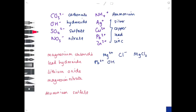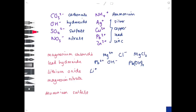With lead hydroxide, you have Pb²⁺ and OH⁻. You need two OH groups to balance, giving Pb(OH)₂ — the brackets are needed because the 2 applies to both oxygen and hydrogen. For lithium oxide: lithium is group one so Li⁺, oxygen is group six so O²⁻, meaning you need two lithiums per oxygen — formula Li₂O.